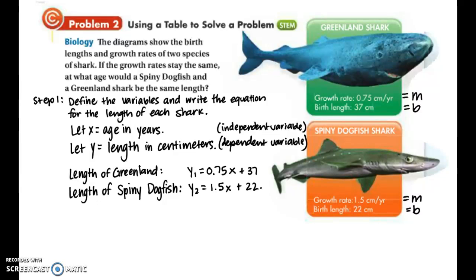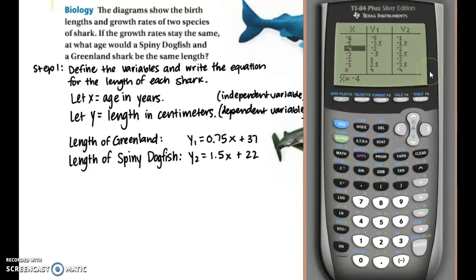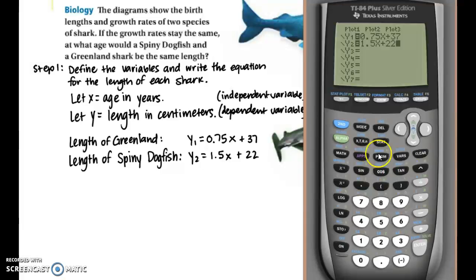So now those are in a nice form to be able to use our calculator and use the table on there to solve the problem. So when turning on the calculator, I come back to the table that we had originally. So I'm going to go to the y equals button again. And we're going to clear our previous equations because we're going to be replacing those with new ones. So now let's type in our new equations 0.75x plus 37 and 1.5x plus 22. Once you have those inputted, let's go to the table again. So you want to press second graph.